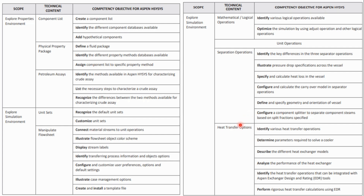For heat transfer operations, there are certain operations available: heater, cooler, heat exchanger, LNG exchanger, and EDR. You should be able to identify various heat transfer operations and specify the parameters needed for a heater or cooler to converge — for example, temperature, pressure, vapor fraction, and duty; you define any two. You should describe the different heat exchanger models, analyze heat exchanger performance (likely in the lab part), identify which heat transfer operation integrates with the EDR tool — the rigorous heat exchanger — and perform rigorous heat transfer calculations using EDR. Heat transfer is vital both for MCQs and lab work.